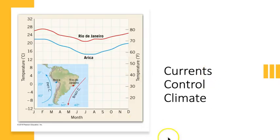Currents control climate. Water takes longer to heat up and cool down than does land, so ocean currents leaving the poles or the equator can travel great distances without a significant change in temperature. These cool or warm currents, in turn, can play a role in controlling the climate on the continents.